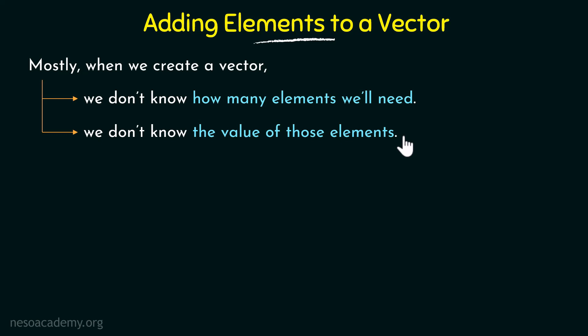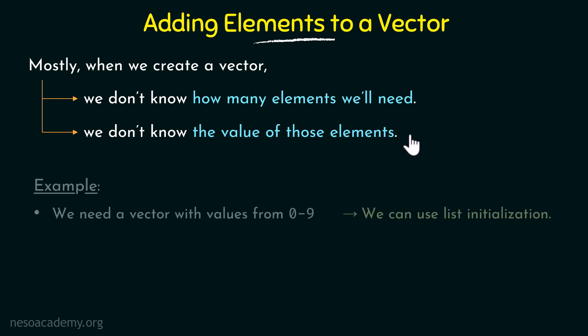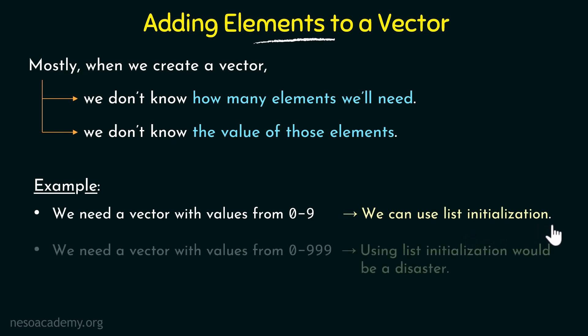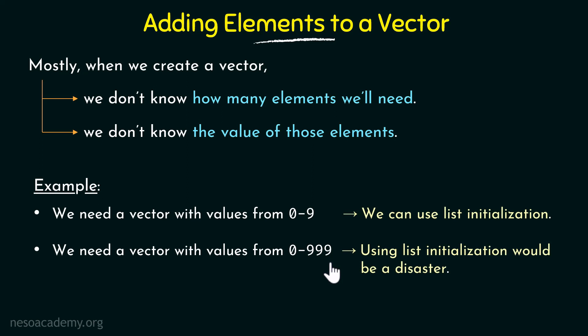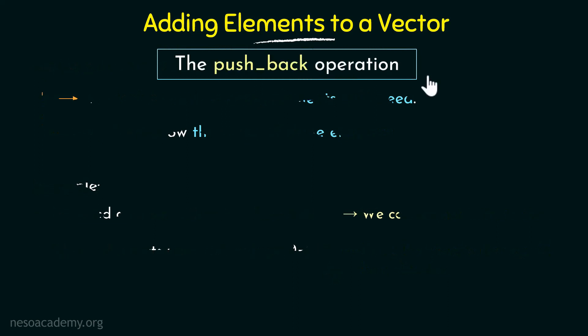The main reason we use vectors is because of their dynamic nature and the flexibility they offer. Unlike other data types where we have to be specific about size and values, with vectors we don't have to be specific, and that is why vectors are really useful. For example, if we need a vector with values from 0 to 9, we can use list initialization easily. But if we need values from 0 to 999, list initialization would be a disaster since we'd have to manually enter all those values.